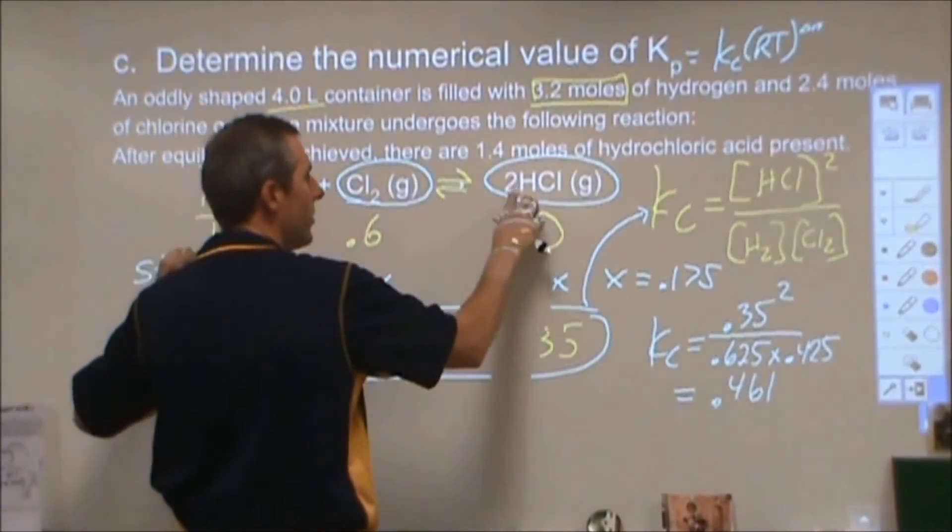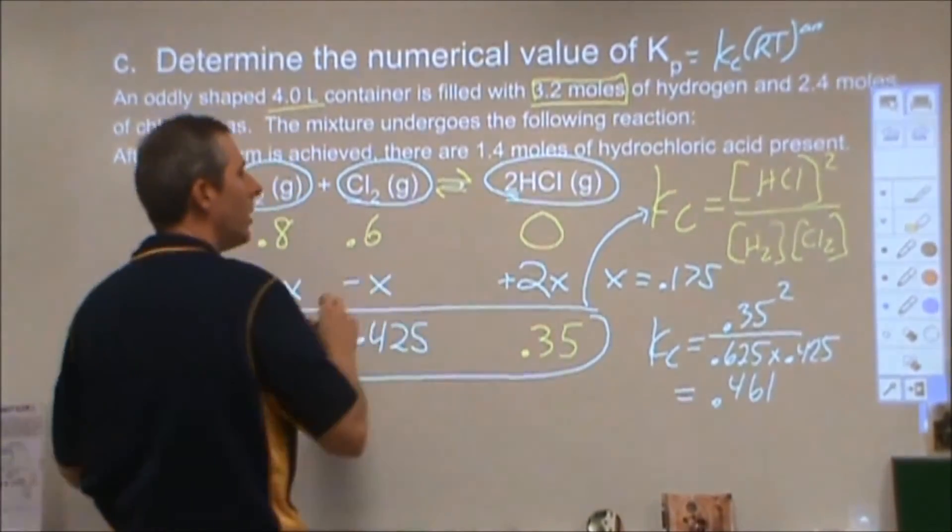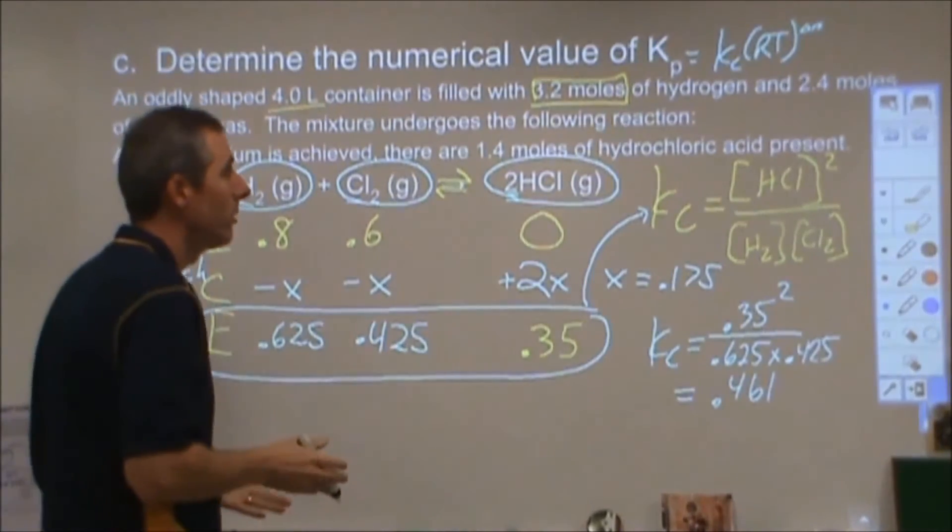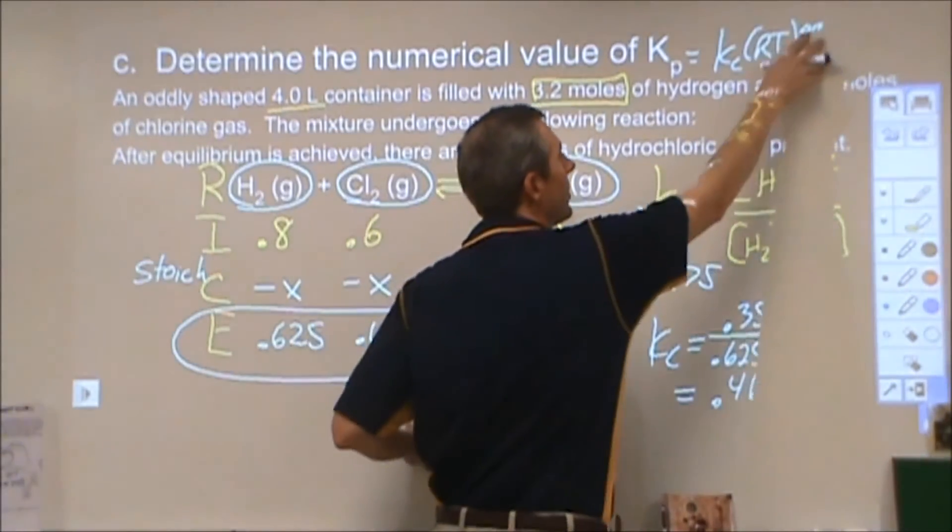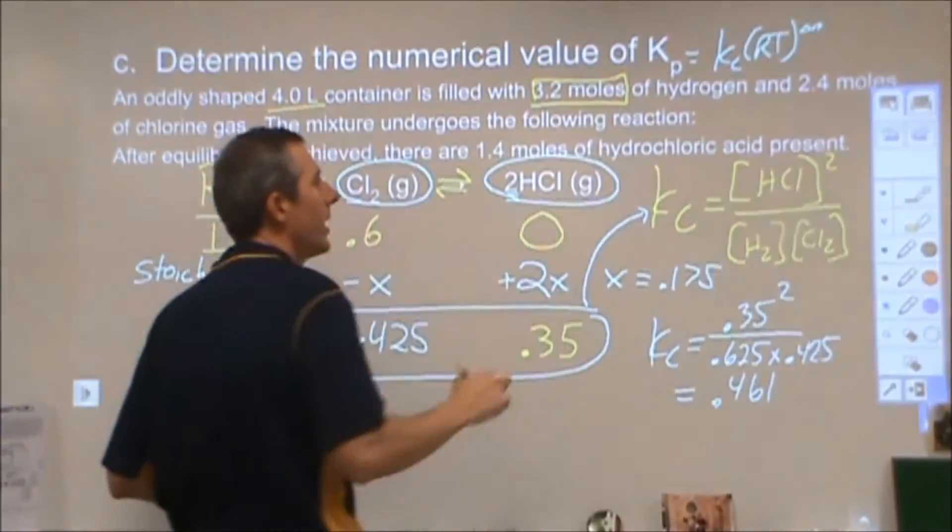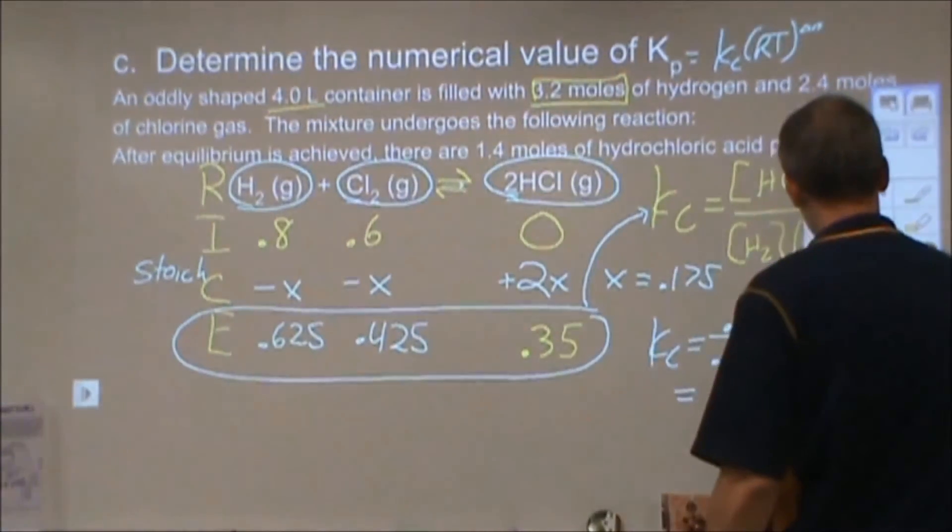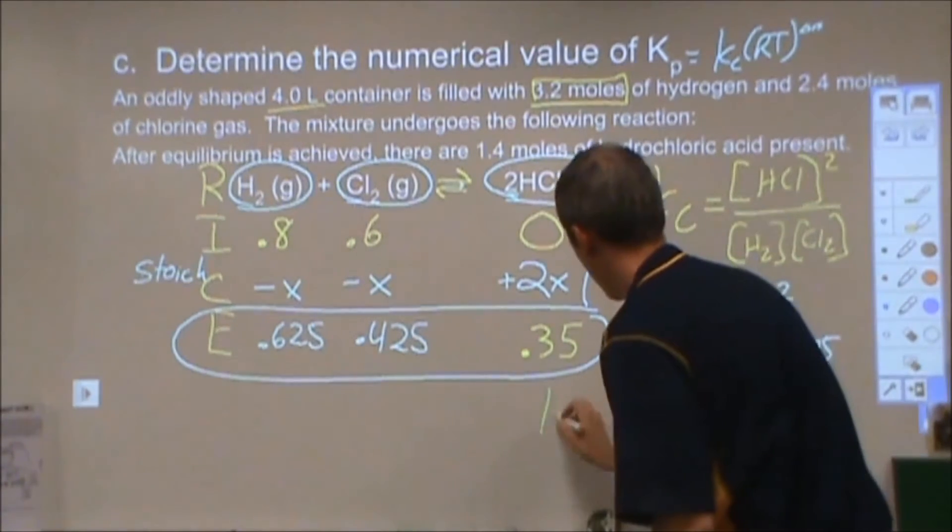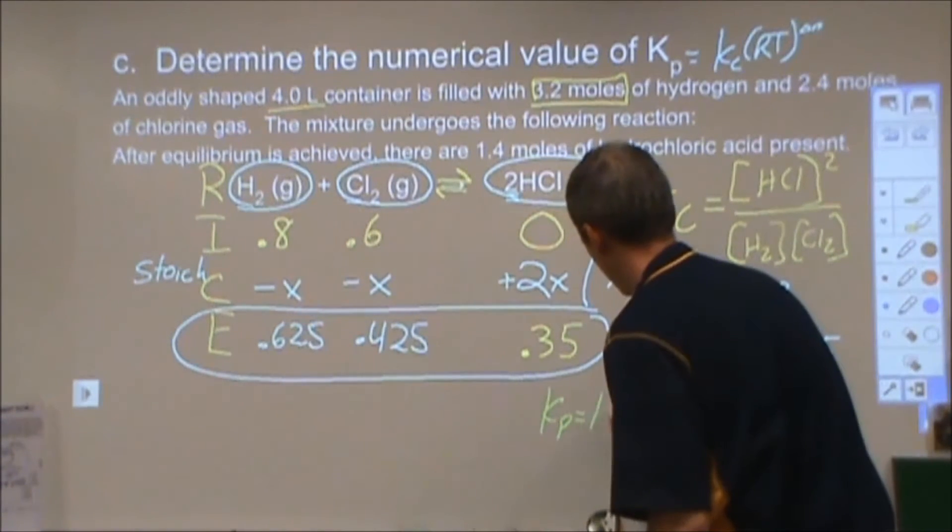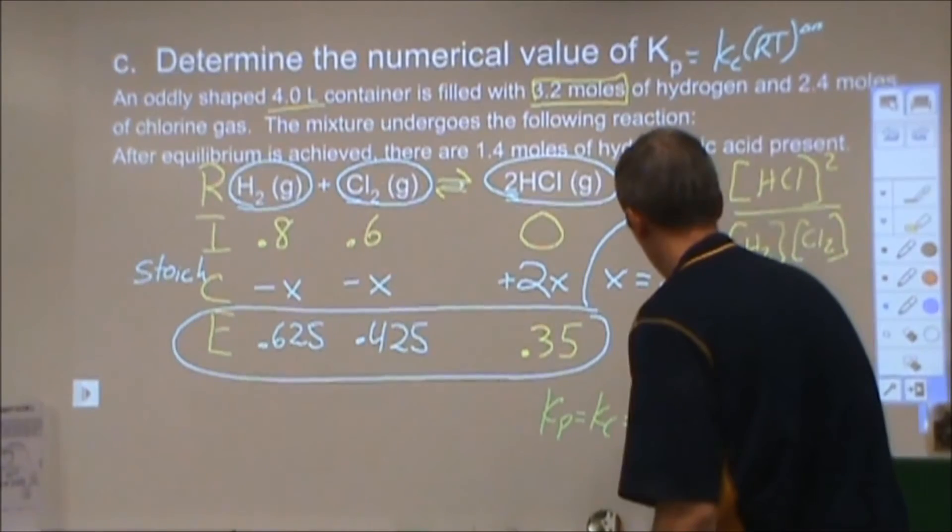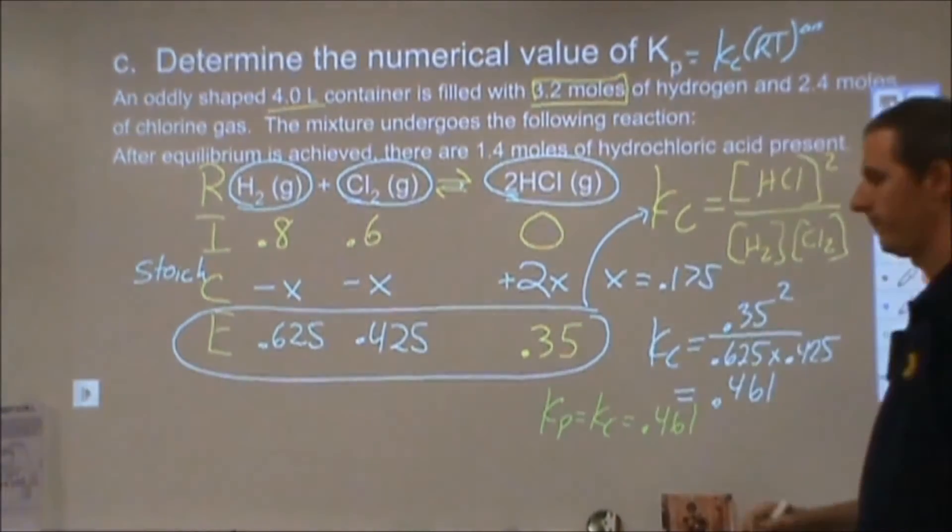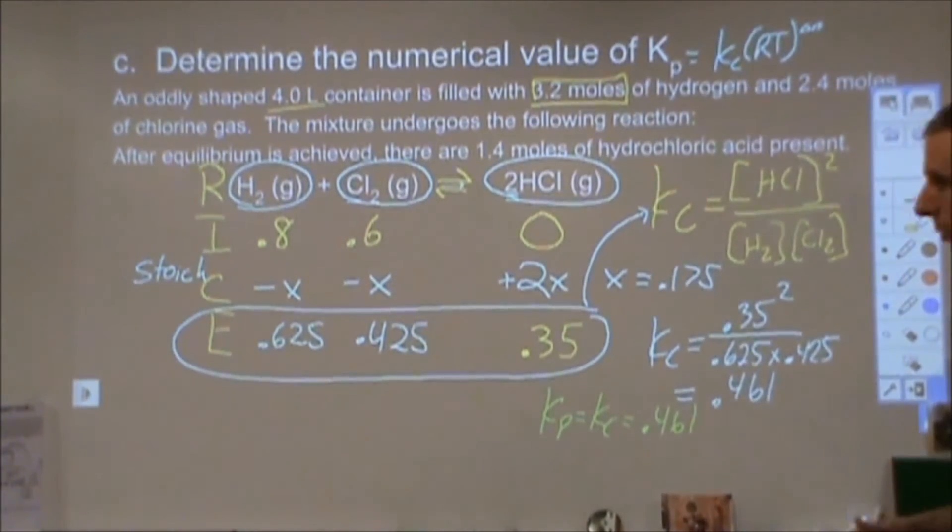And so since I start with two and end with two, then my delta n is going to be zero, and anything raised to the zeroth power is one, so my Kp will equal my Kc. So my answer for the second part, for part c, is that my Kp in this particular reaction is also equal to Kc, and it would also be 0.461.